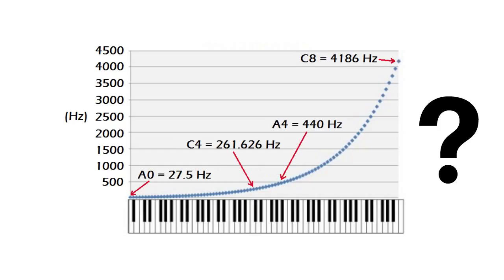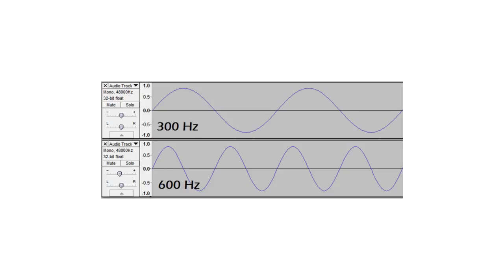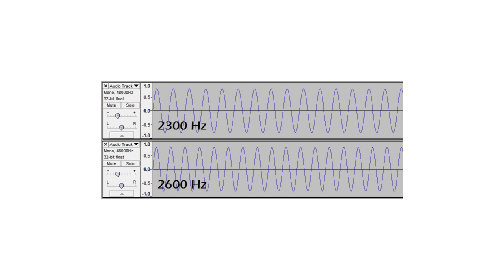Why does it happen this way and not linearly? We can verify it visually. Here we've got a 300 Hz wave and a 600 Hz wave. The difference between these two waves is very clear. However, we can't see much difference between these 2300 Hz and 2600 Hz waves even though they also have a difference of 300 Hz.